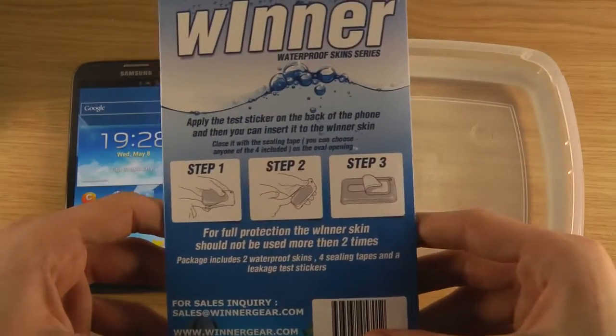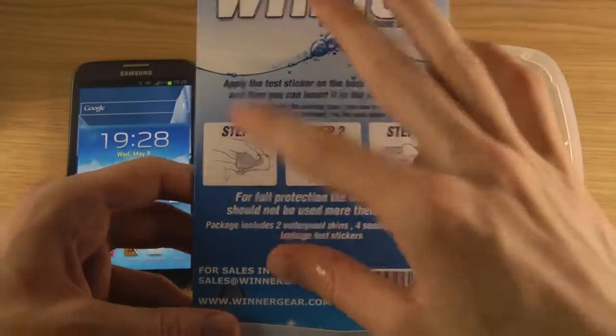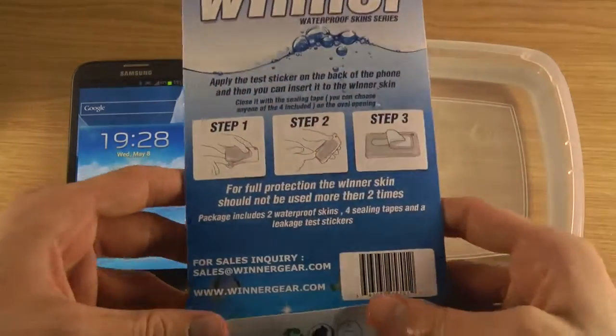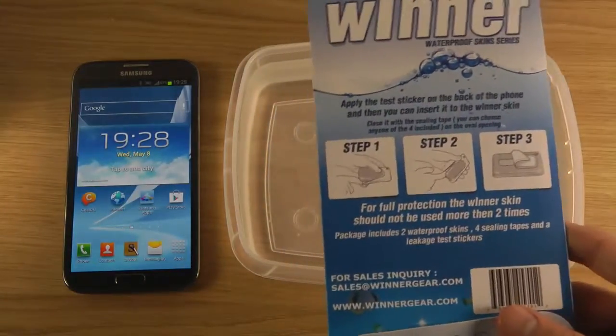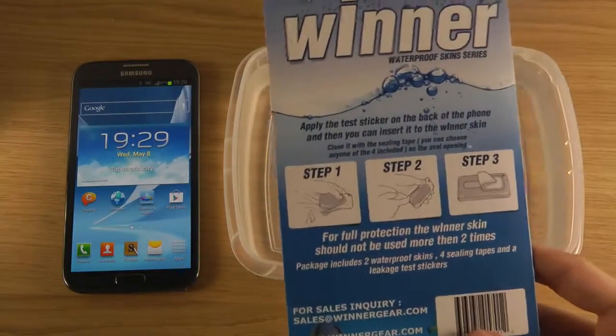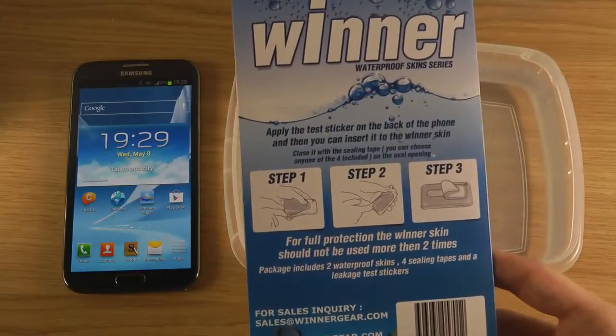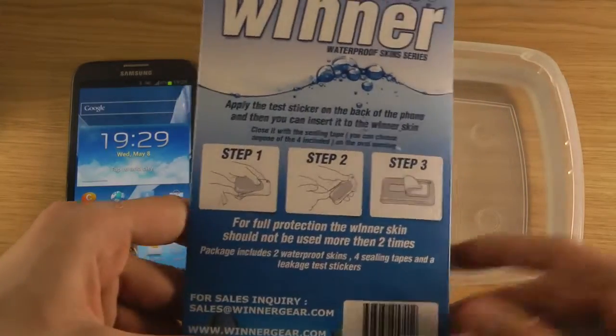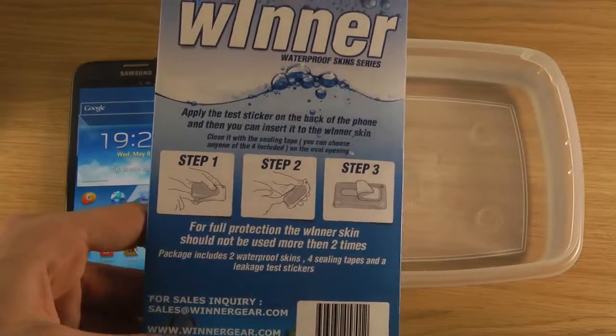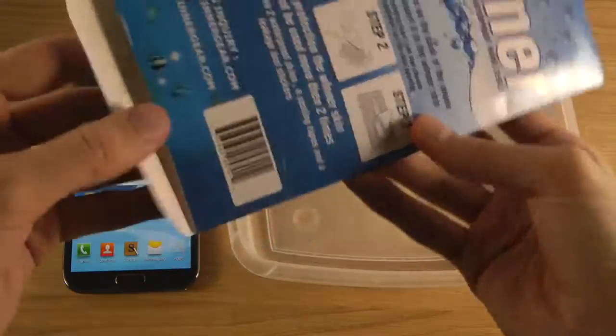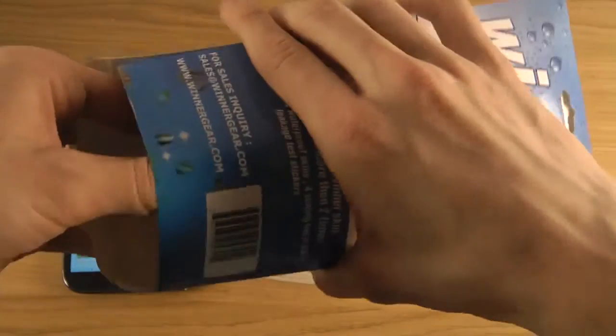So this is a skin that you put on your phone, in this case the Galaxy Note 2, and then you'll be able to drop it in water. It's going to be waterproof and it's very simple. Step-by-step instructions make it quite easy. So let's unbox this to see what we get here.